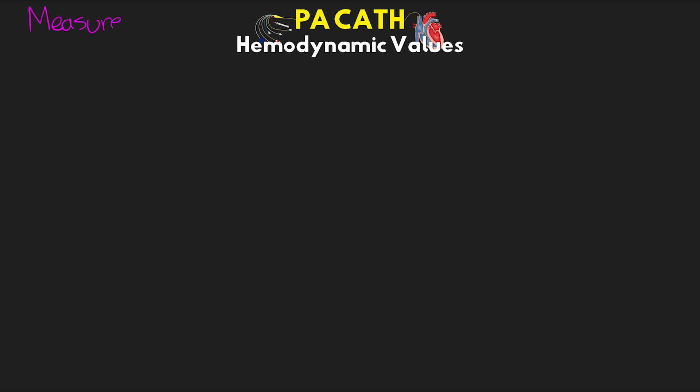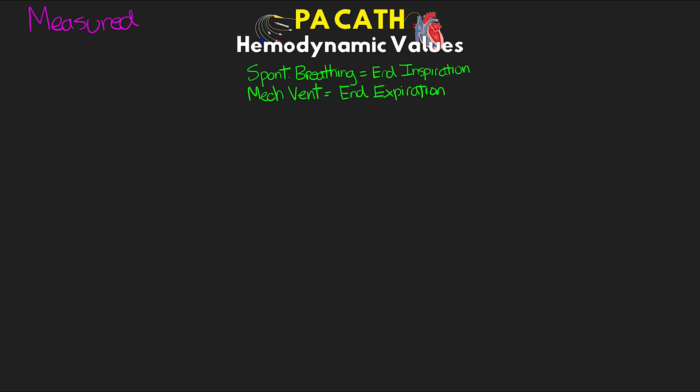So let's start off talking about the values that we get by directly measuring them. Here I'm going to quote the values for spontaneously breathing patients, but know that those on mechanical ventilation are going to have changes to either the values we expect to be normal or the way in which we get them. For spontaneously breathing patients, we're going to get our readings at the end of inspiration, while for mechanically ventilated patients on positive pressure ventilation, we're going to be getting the reading at the end of expiration. Both of these times are when the pressure in the patient's lungs most closely matches that of atmospheric air.